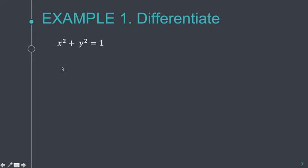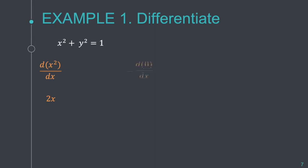For x², we can do it explicitly because the variable is the same, so the derivative is 2x. The constant 1 can be expressed as 1 × x⁰, so the derivative of 1 is just 0.